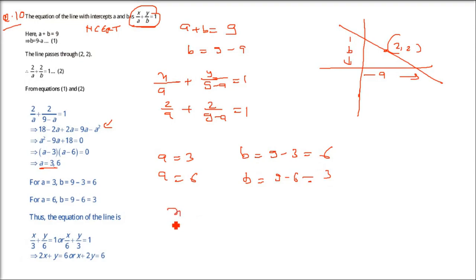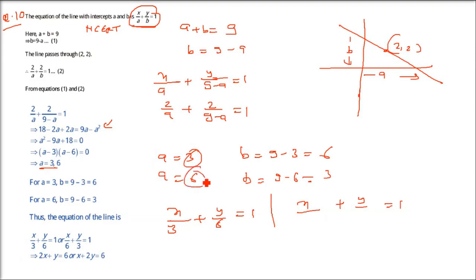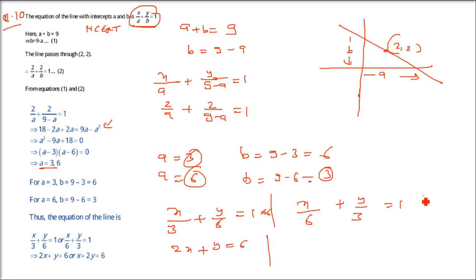Now we have our a and b values. For the first case, x/3 + y/6 = 1; multiply both sides by 6 to get 2x + y = 6. For the second case, x/6 + y/3 = 1; multiply both sides by 6 to get x + 2y = 6. These are the two equations.